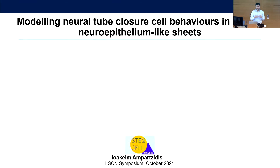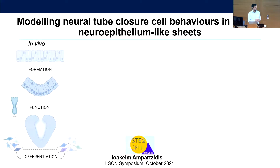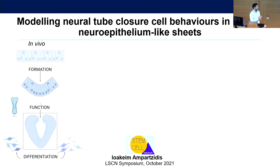To begin with, we need to understand how the neural tube is formed. This is a process that takes place in the first month of gestation, where we begin with a flat epithelium which bends and elevates over time, giving rise to the neural tube. A very important cell behavior found there is apical constriction, which is the squeezing of the apical area of the cell in order to transmit wave forces across the epithelium.